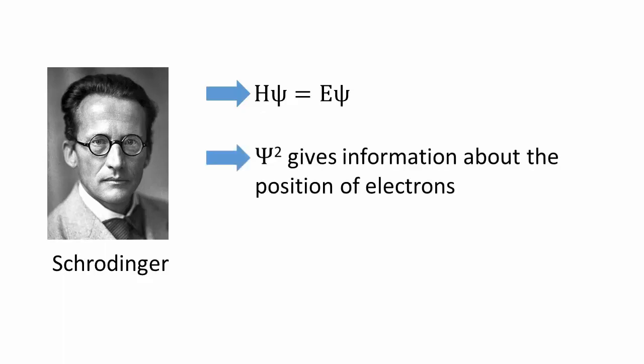The wave function squared tells us everything we can know about the position of the electrons, and this limits us to probabilities. Heisenberg precludes certainty. We can only talk in terms of probability.